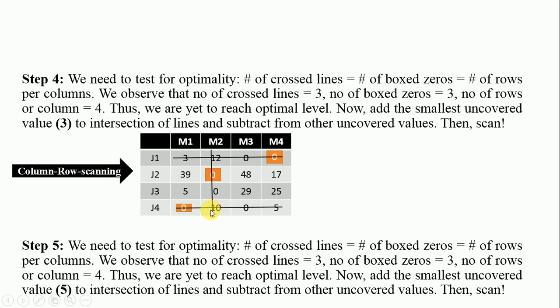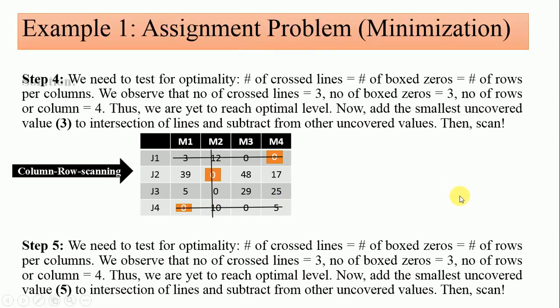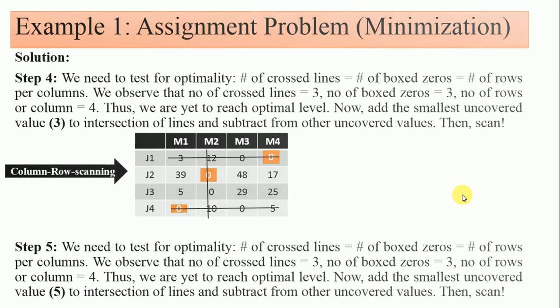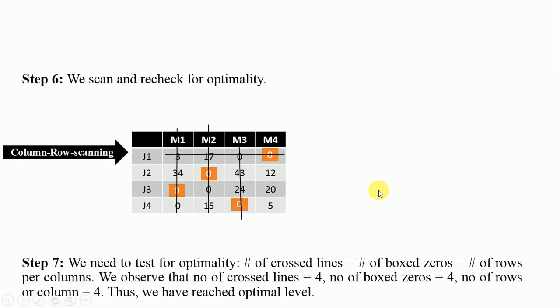On the resulting table you still do the column-row scanning. When we did this column-row scanning, we observed that the number of boxed zeros is now four, the number of crossed lines is now four, and the number of rows or columns is four. At that point, we have reached the optimal level.